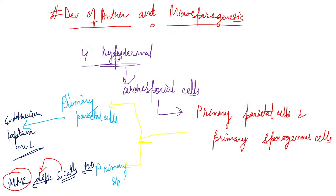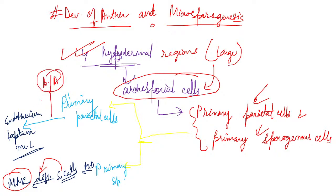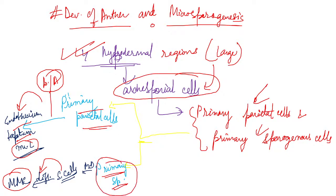After formation of the microspore mother cell (MMC), it undergoes meiosis and forms four haploid microspores. These microspores are also tetrad in nature. These four haploid microspores form the pollen grains. Pollen grains are spherical and 25 to 50 micrometers in diameter.